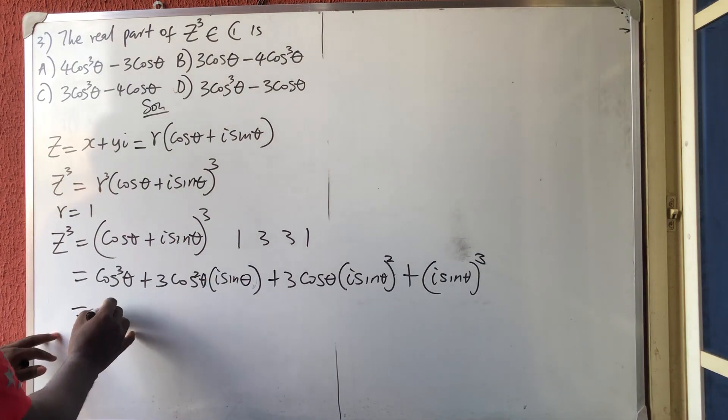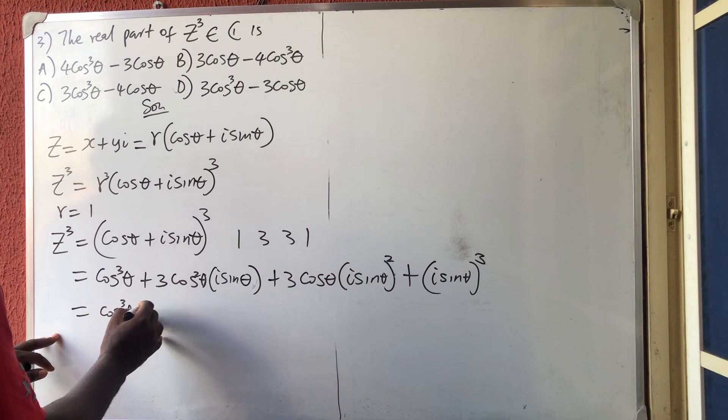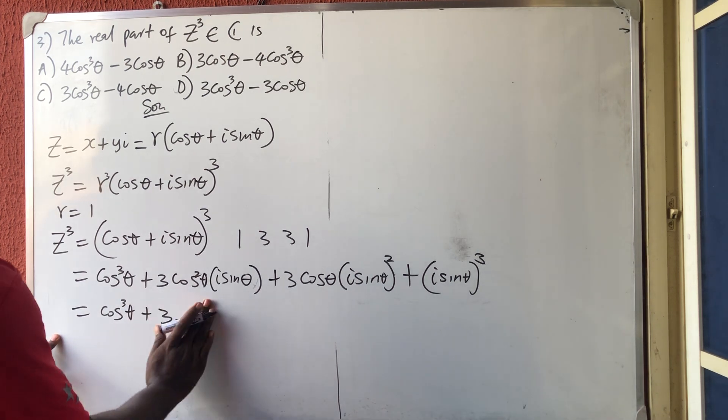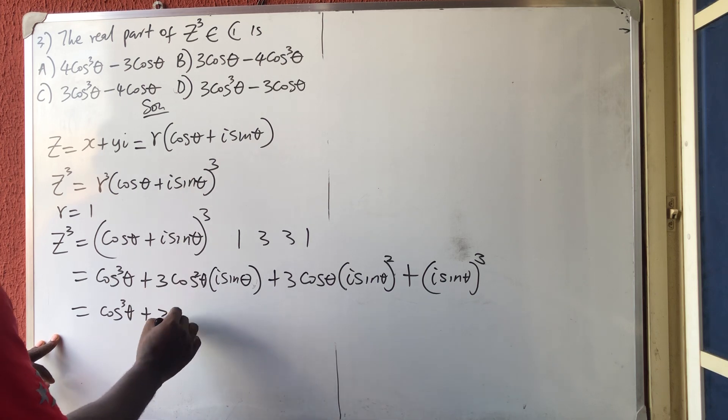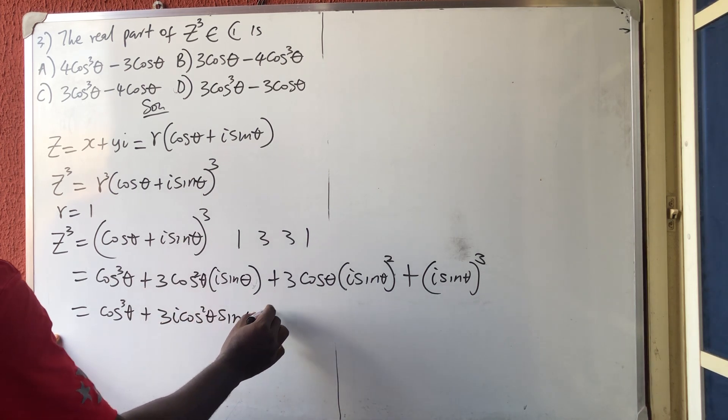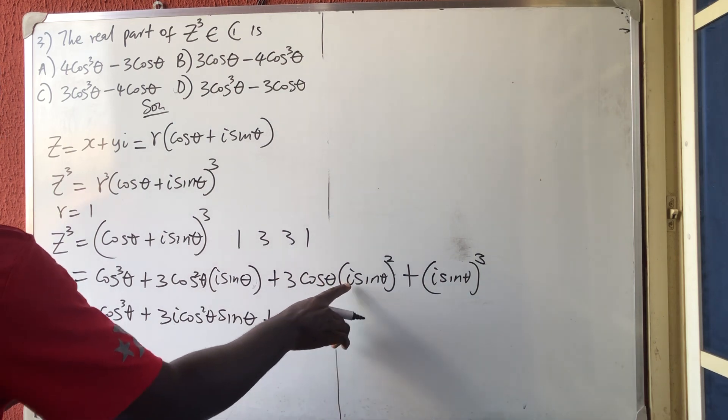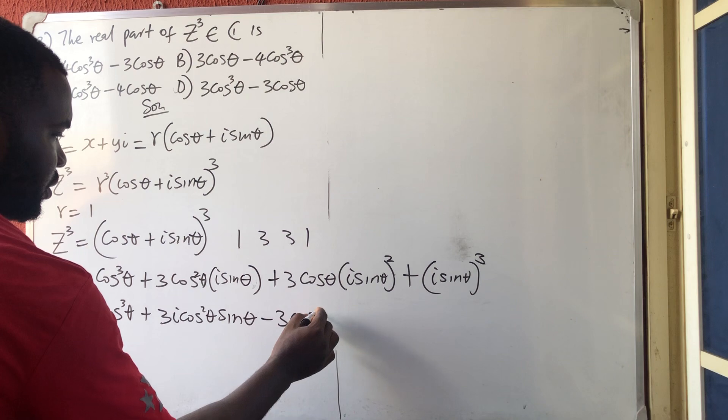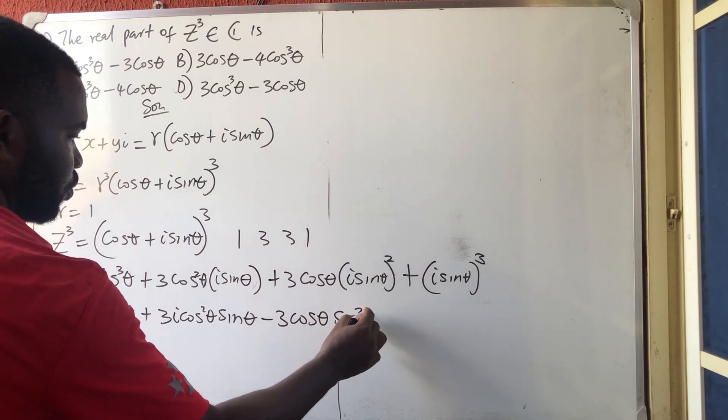So, if you look at this, I'm going to have that this is cos cubed theta plus 3i cos square theta sin theta plus i squared is minus 1.